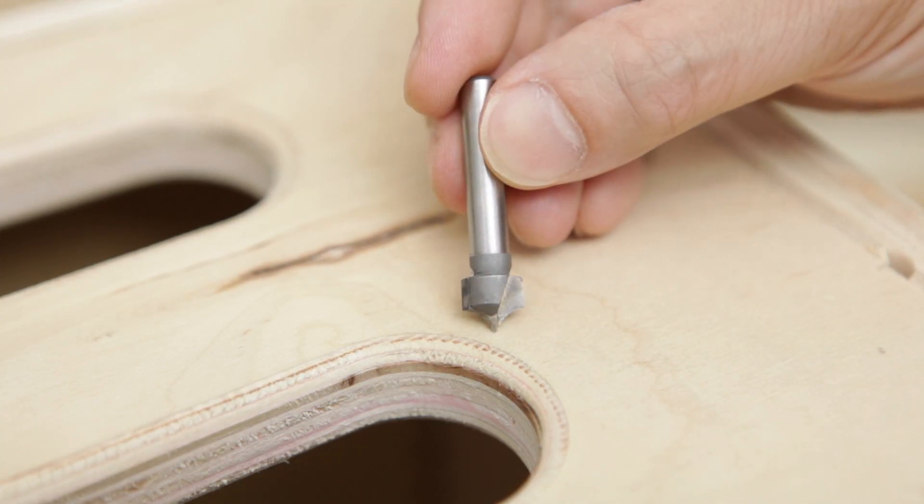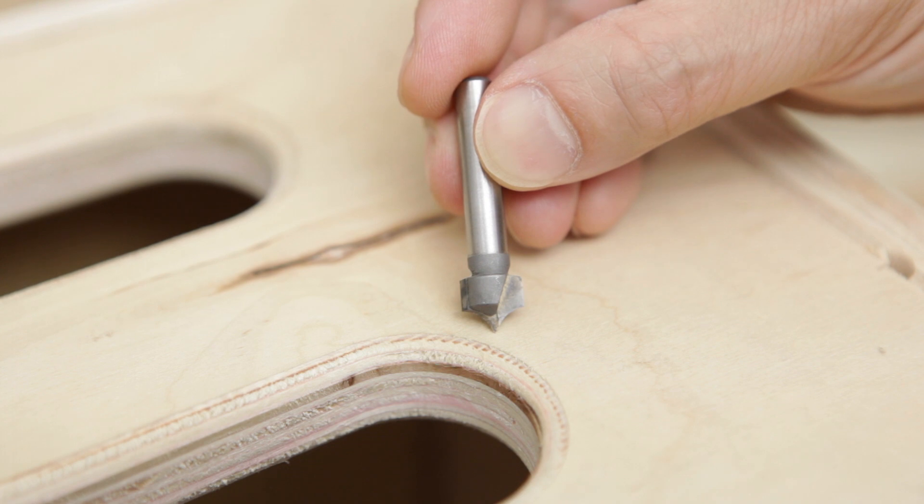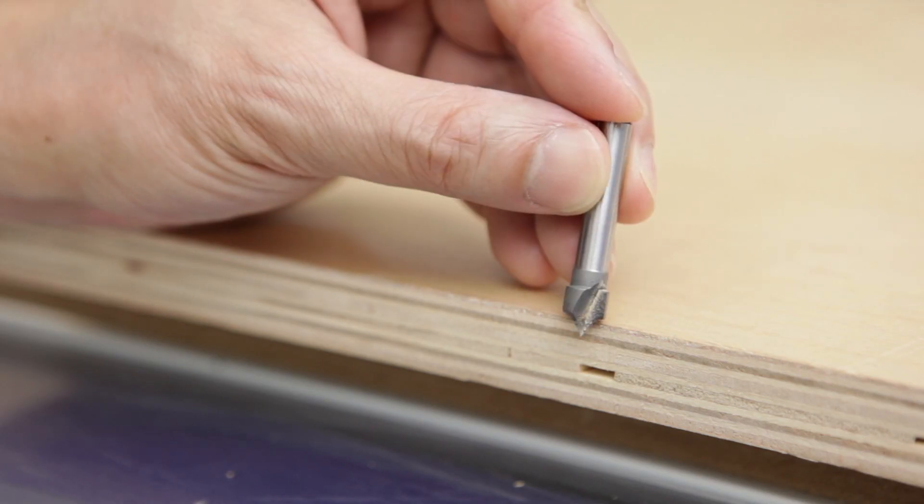Instead we're going to use point-cutting roundover bits. These are suitable for plunging. We set them to cut directly on the profile line of our pieces to get that nice rounded edge. You can also use them to carve letters and get some interesting effects.